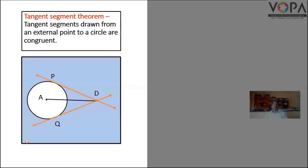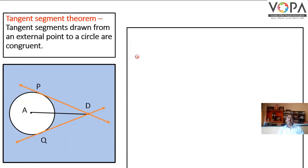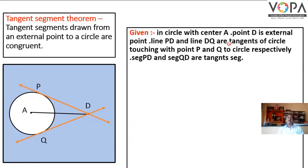In this figure, we have a circle with center A. The given of this theorem: point D is an external point of the circle with center A, and lines PD and DQ are two tangents drawn from the external point, touching the circle at points P and Q. Therefore, segment PD and segment QD are tangent segments.